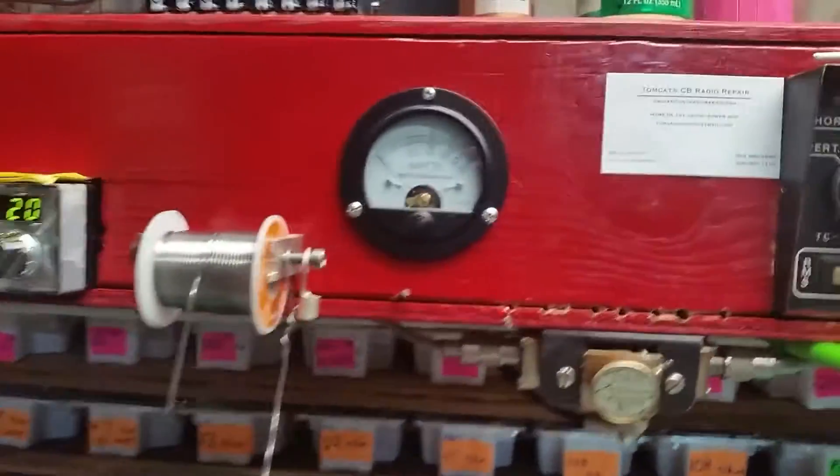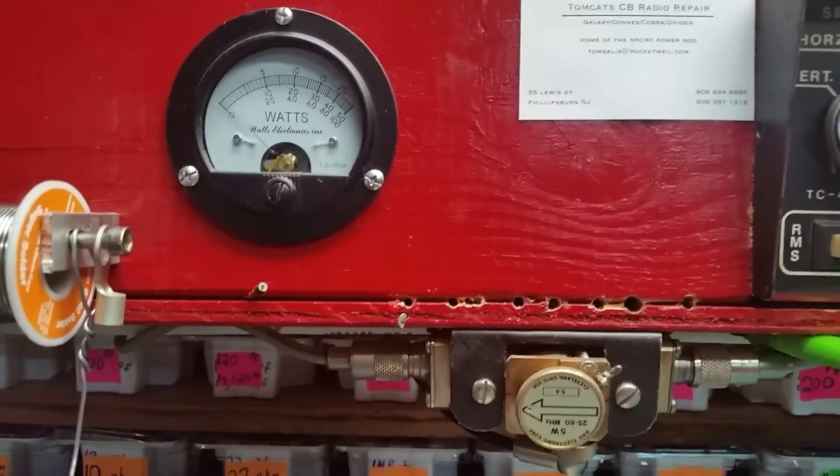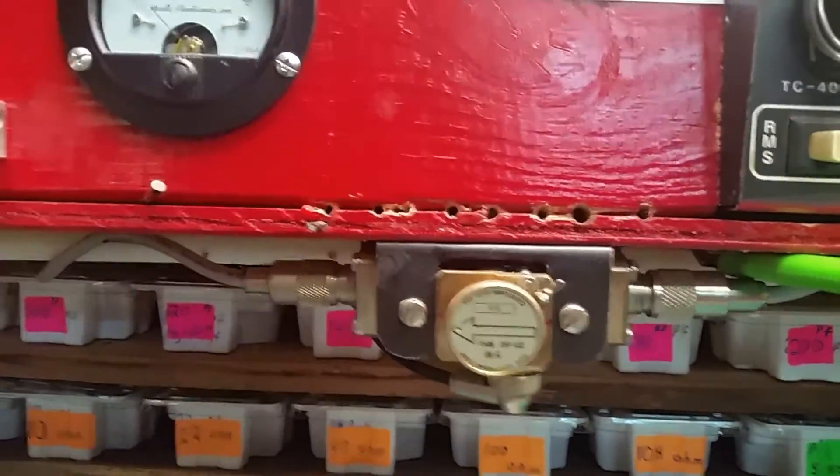Back up on 2000 watt scale. This is going to be the reverse meter going back to the radio, coming out of the amp back to the radio. Got a five watt slug in it.